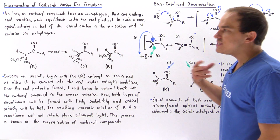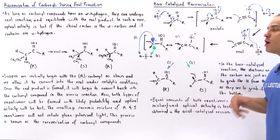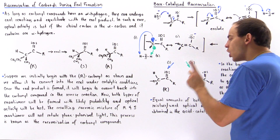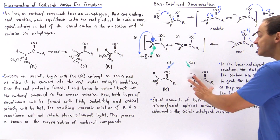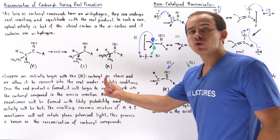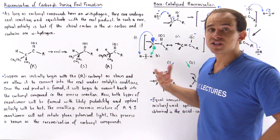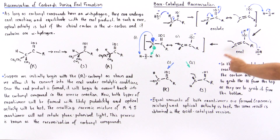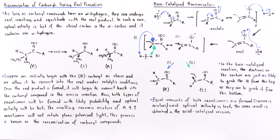Because the electrons have equal probability of being found in the top lobe and the bottom lobe, pathway 1 and pathway 2 are equally likely to take place. This means we produce equal amounts of R and S enantiomer — a racemic mixture. The R enantiomer rotates plane polarized light a certain degree in one direction, and the S enantiomer rotates it an equal amount in the opposite direction. The net result is no rotation of plane polarized light. In the base-catalyzed racemization, the electrons on the carbon are equally likely to grab the H from the top or from the bottom, so optical activity is lost.